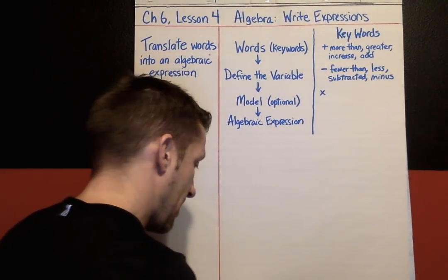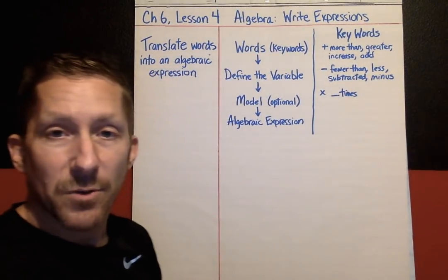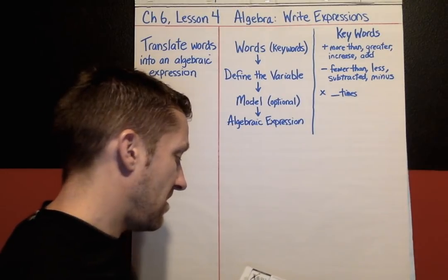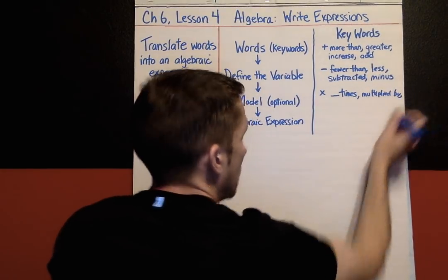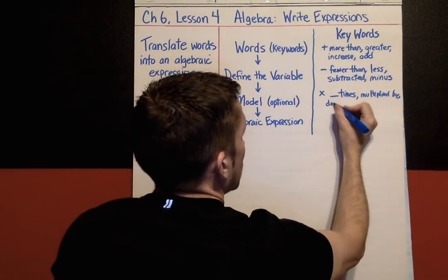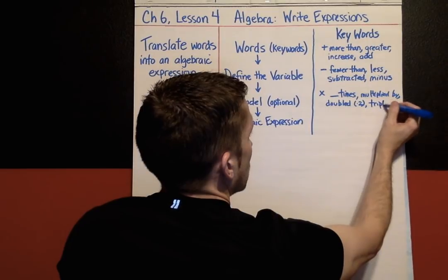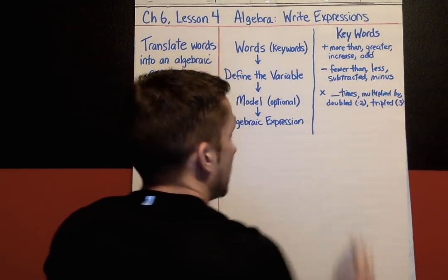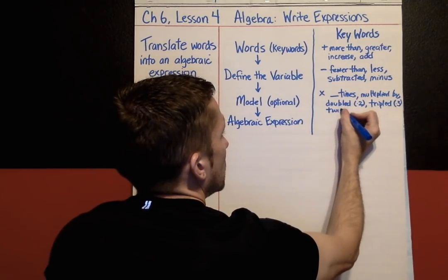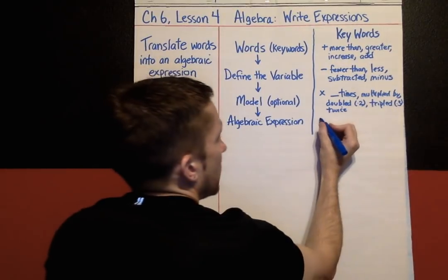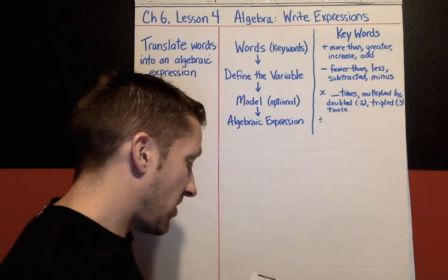Keywords that indicate multiplying: a number 'times' something — like 12 times, 8 times, 4.5 times — and 'multiplied by.' There are also specific ones: 'doubled' means times two, 'tripled' means times three, and 'twice' also means times two. Again, this is a good list but you will find more keywords.